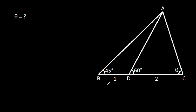In this video, we have been given that BD is 1, CD is 2, angle ABD is 45 degrees, angle ADC is 60 degrees, and angle ACD is theta. We have to find theta.